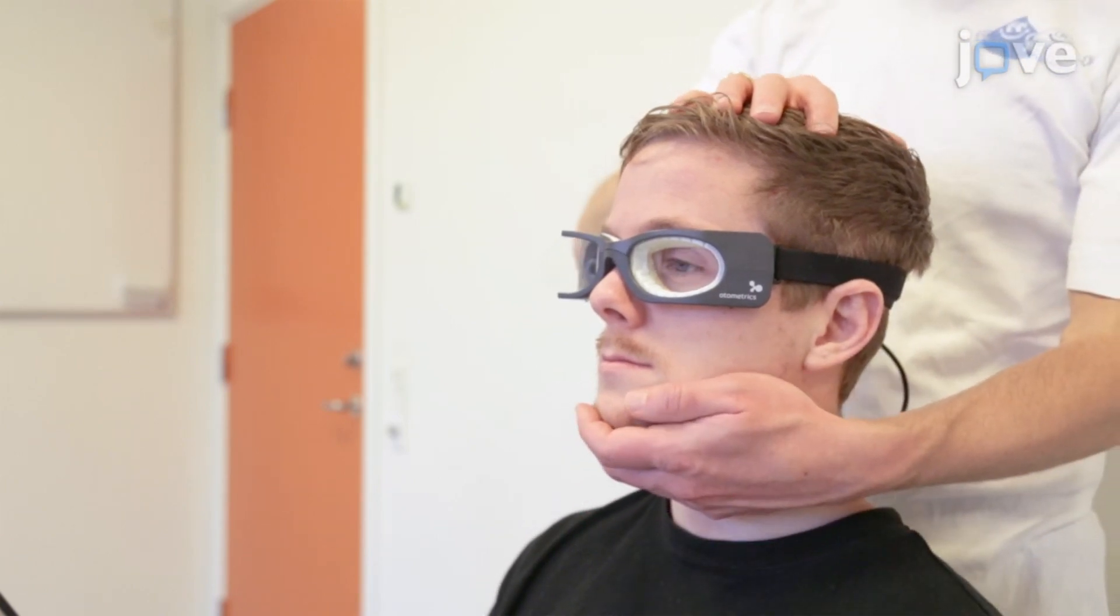To perform vertical SCC testing, place the dominant hand on top of the participant's head, and direct the fingers in the direction of the anterior SCC to be tested. Place the non-dominant hand on the chin.